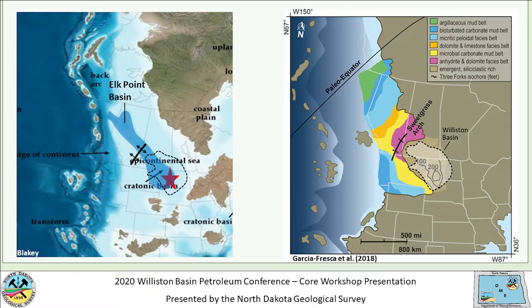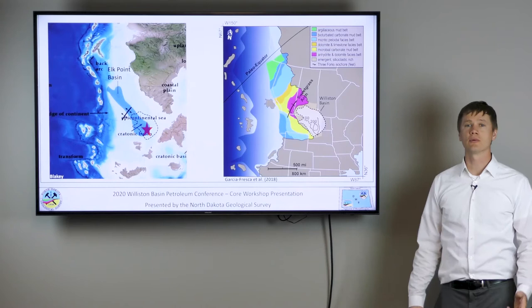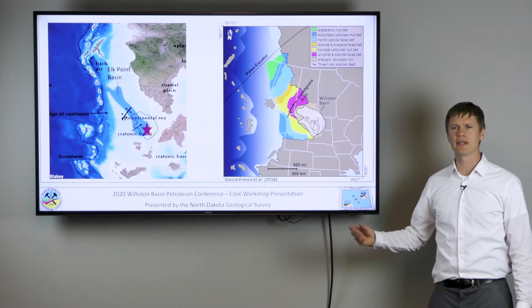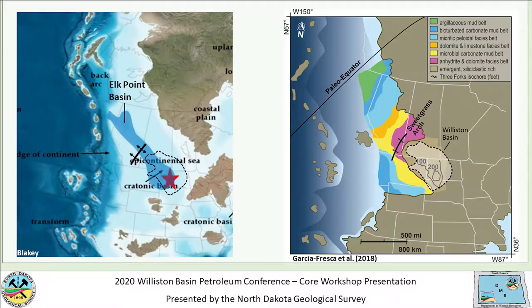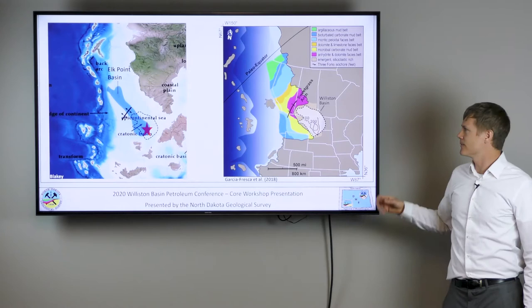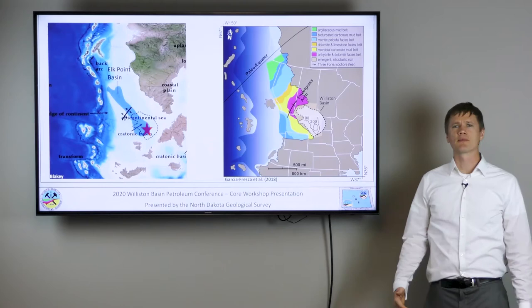During Three Forks deposition in the late Devonian, the Sweetgrass Arch developed — a paleo-topographic high that formed in the middle of the Elk Point Basin. This topographic high basically restricted and cut off the connection between the Williston Basin and the open ocean during Three Forks deposition. At that time, the Williston Basin was still a depression infilling with water and sediments, but without a strong connection to the open ocean, hence perhaps why the Three Forks Formation has limited fossil content.